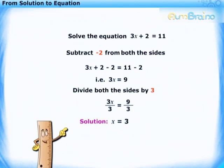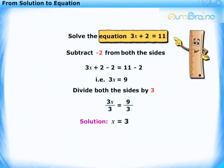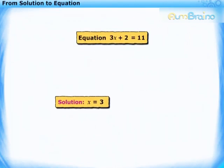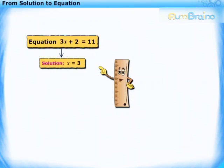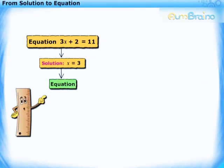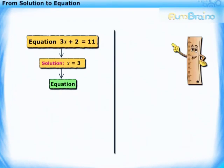Generally we solve an equation to obtain its solution. Have you ever thought what will happen if we follow the reverse path? Let us now try to obtain an equation from this solution, that is, x is equal to 3.